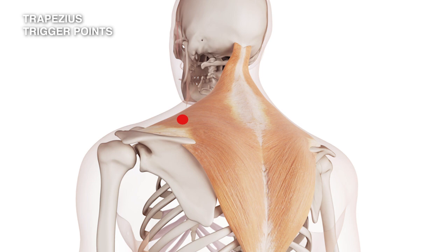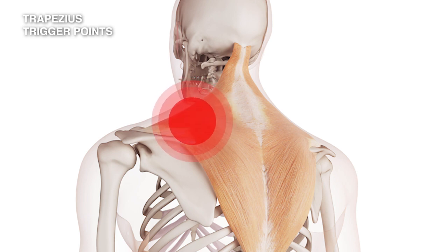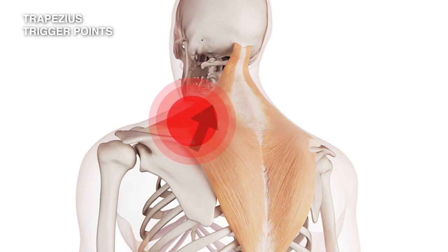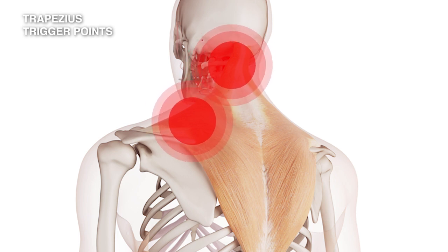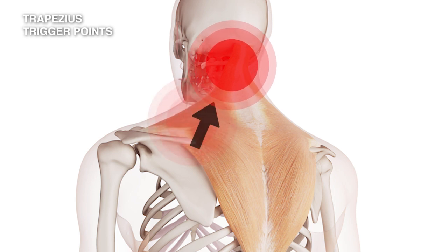Trigger point number two also occurs in the free edge of the trapezius muscle, halfway along this free edge. It is also a very common trigger point. When active, the pain starts at the trigger and refers across the trapezius, up the neck, and ends at the base of the skull.